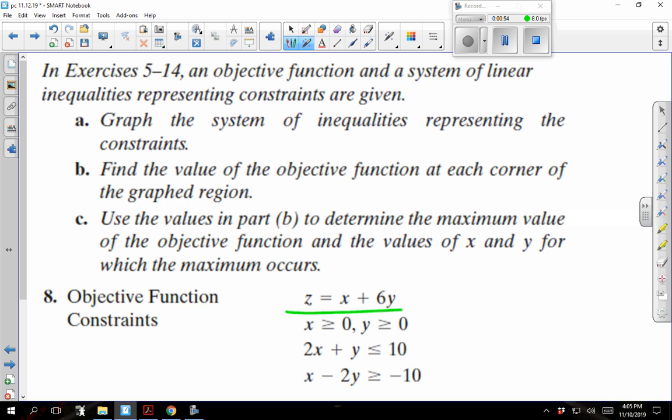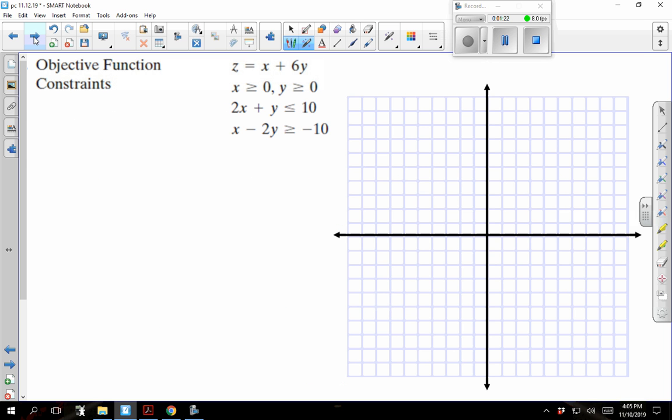So that's when the objective function comes into place. We're going to use our constraints to graph. Once they're graphed, we'll use the vertices of that graphed set of inequalities to plug into your objective function and then maximize our values. So I'm going to use this page as a graph.